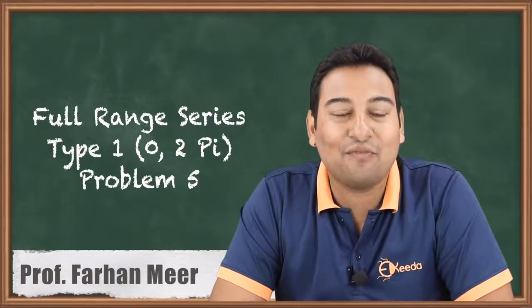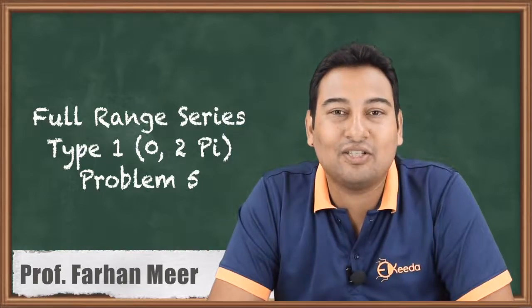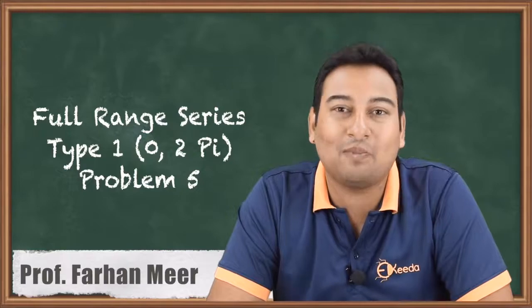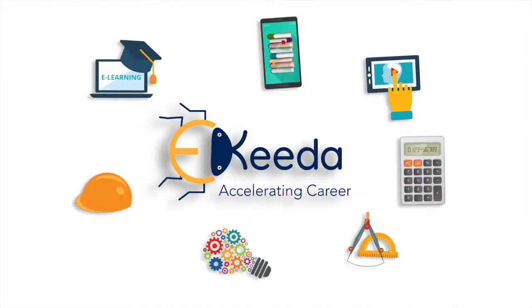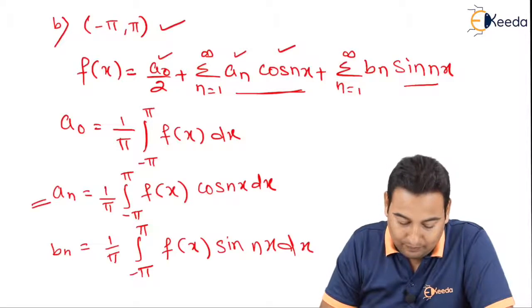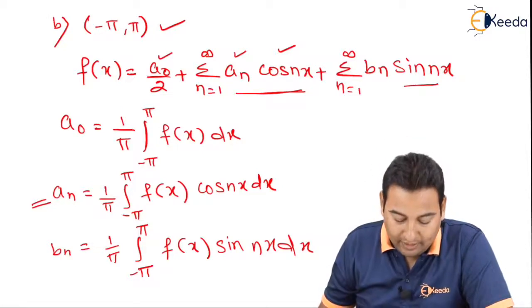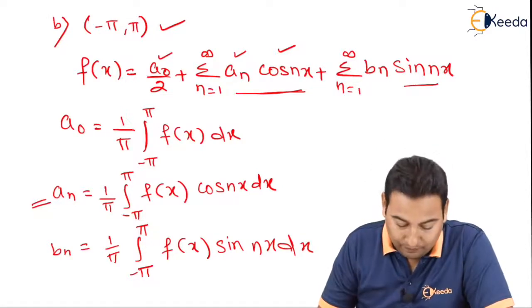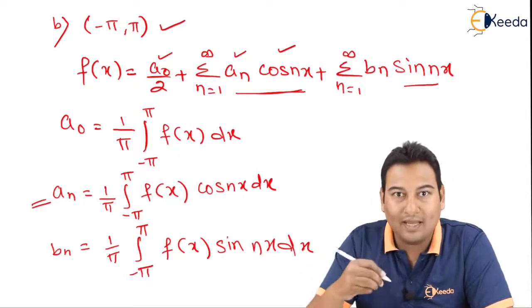Hello friends. In this video we'll be discussing Fourier series for the full range series interval minus pi to pi. This is the fifth problem and first problem of the minus pi to pi range. Welcome back friends. Now we are starting with the next range minus pi to pi. Let's have a look at the formula that we have already discussed. The only difference is the limits — in case of 0 to 2π the limits are 0 to 2π, but here it is minus π to π.